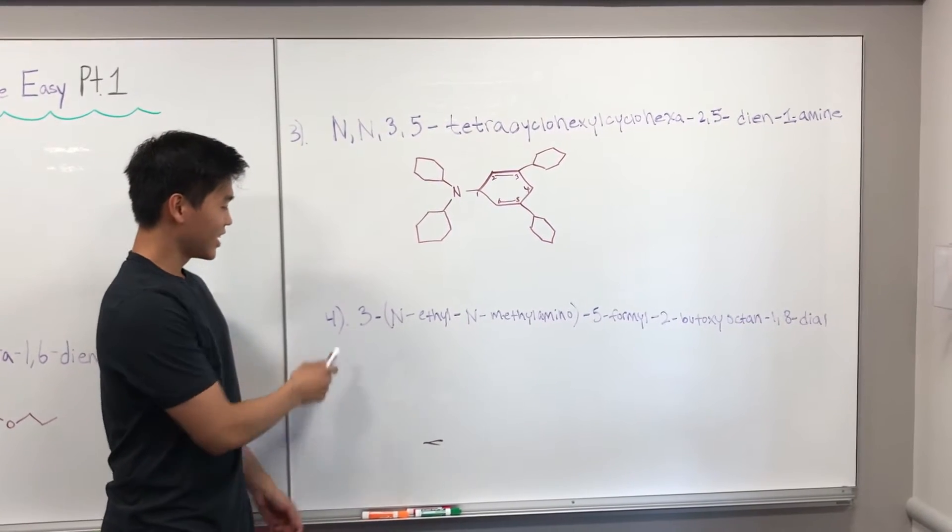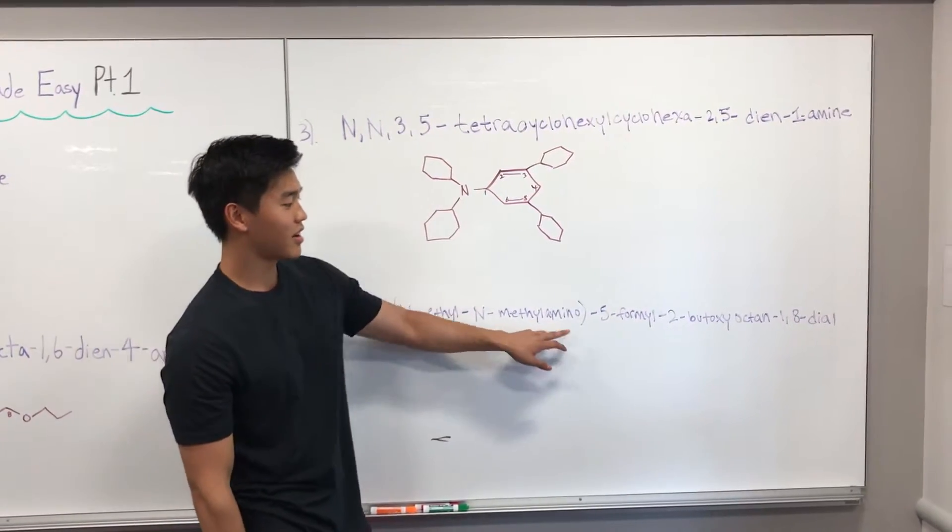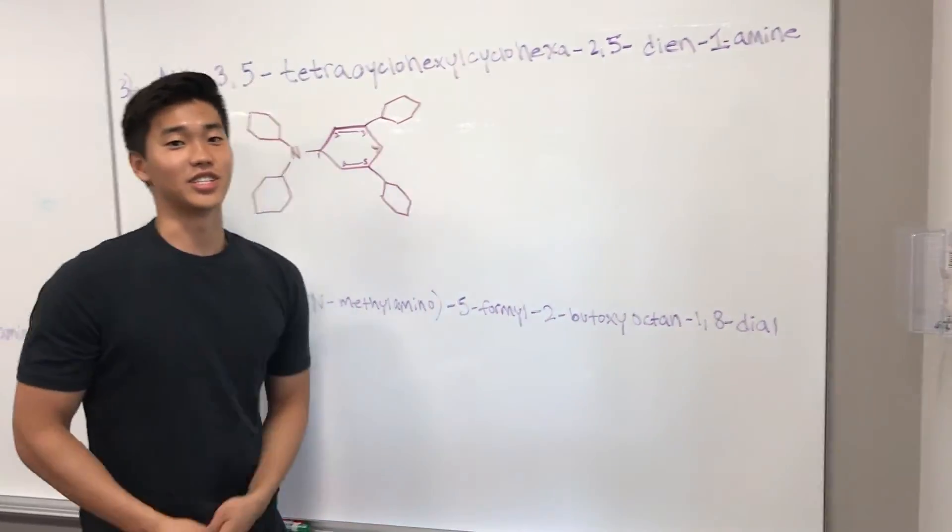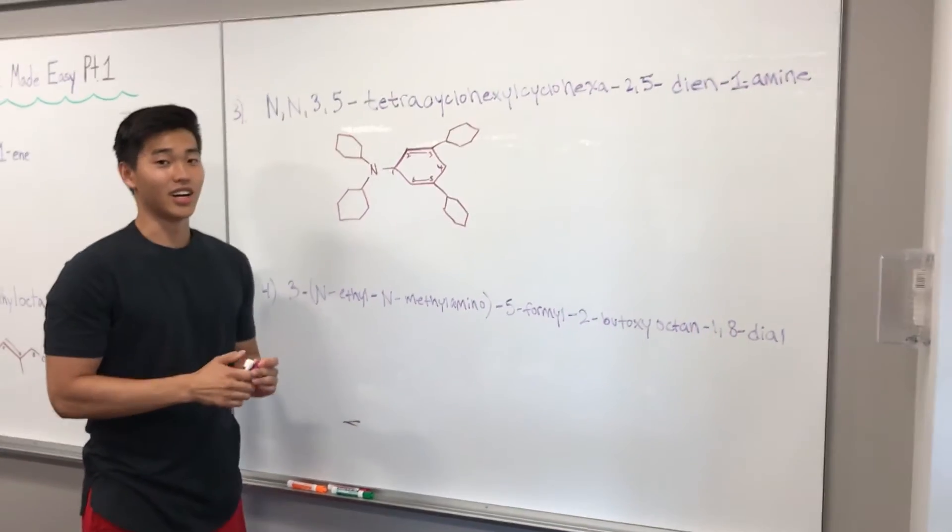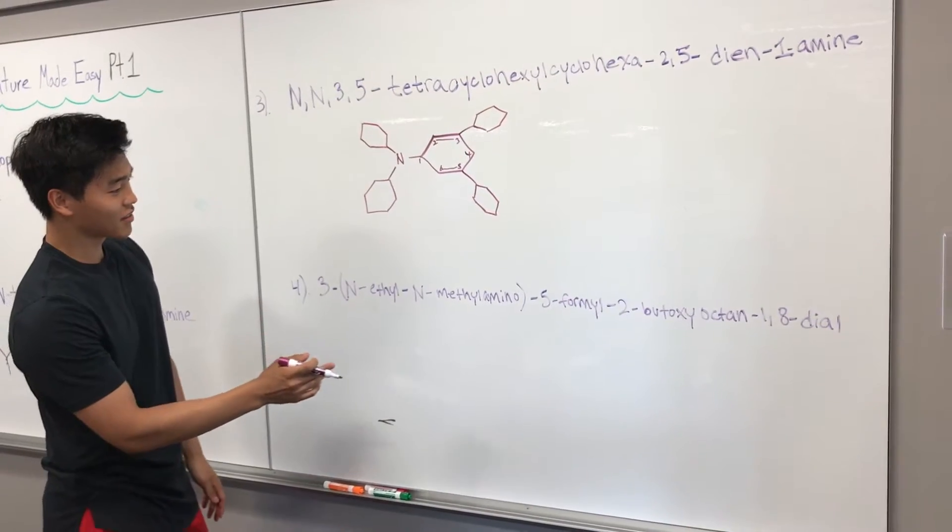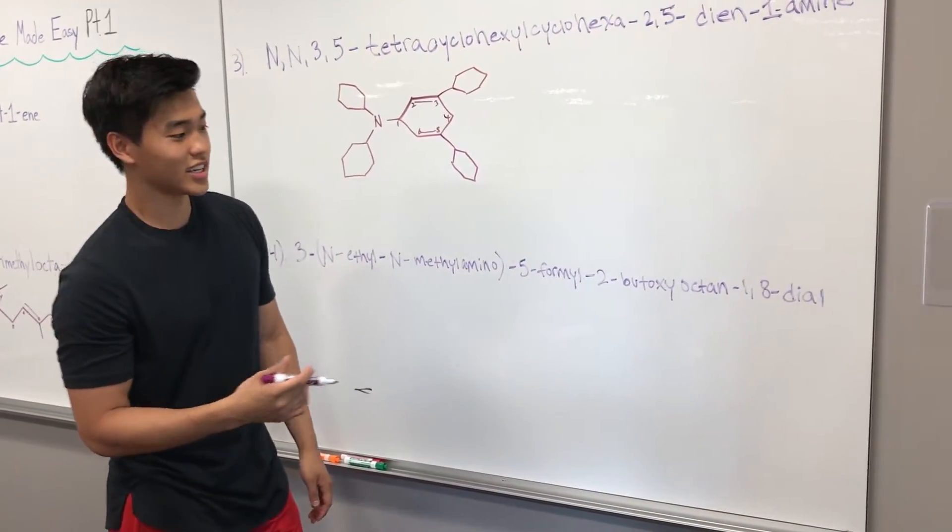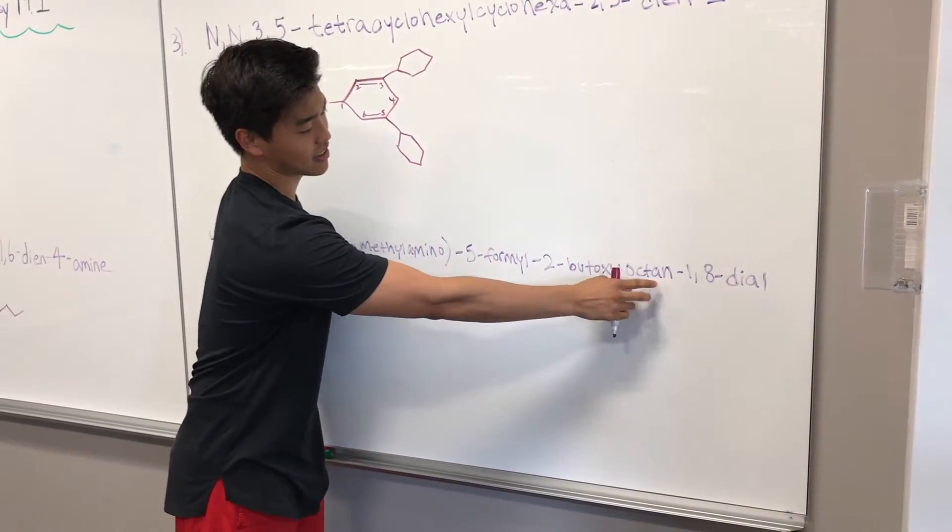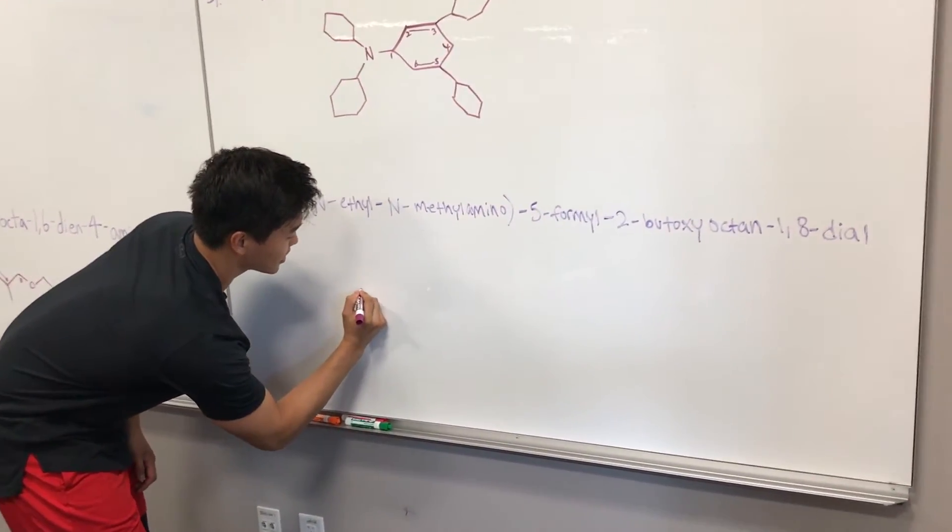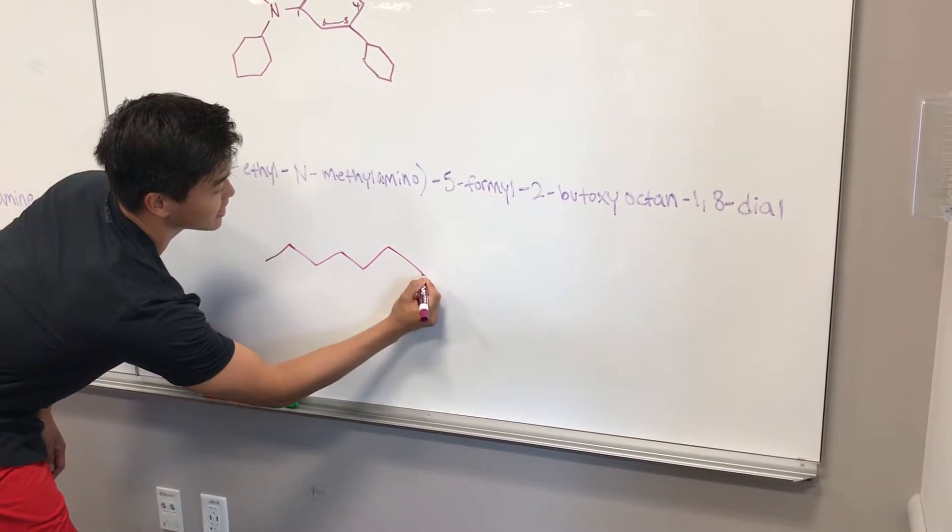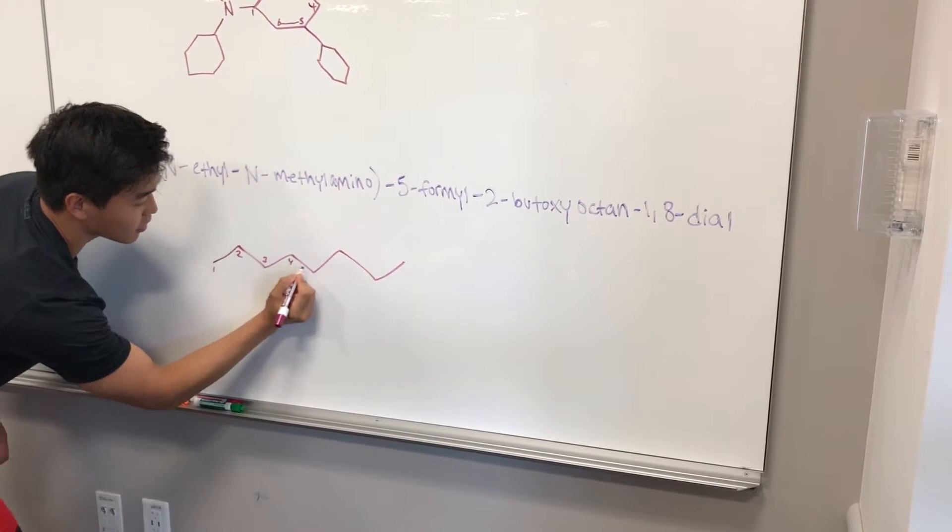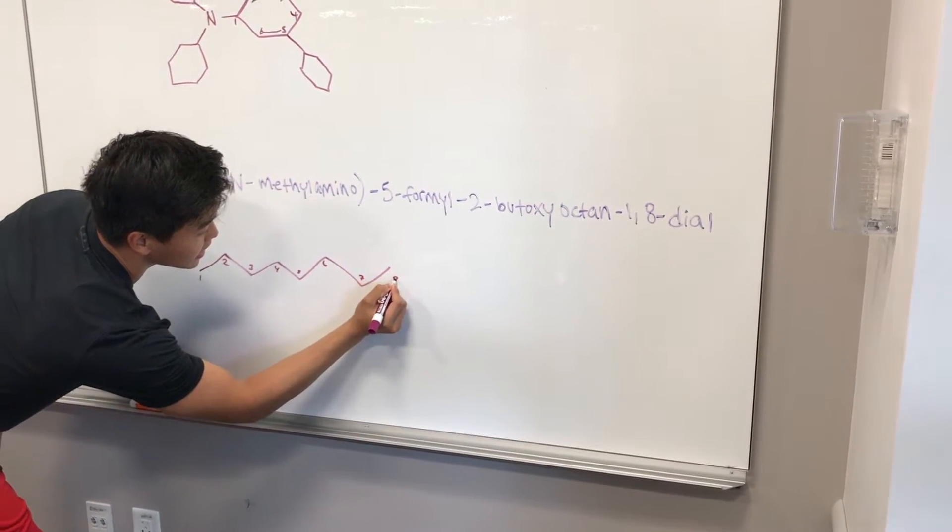Alright. Now this one, I'm going to hand over back to Lyndon. Okay. So last one. 3-(N-ethyl-N-methylamino)-5-formyl-2-butoxy-octan-1,8-diol. It's super long, but hopefully after this explanation, it will seem pretty easy. And if you got it, then that's even more impressive. And so again, we're going to start with the parent chain. That's our step one, which is octan, right here. And so again, we'll have eight carbons. So one, two, three, four, five, six, seven, eight. And I'll just label these.